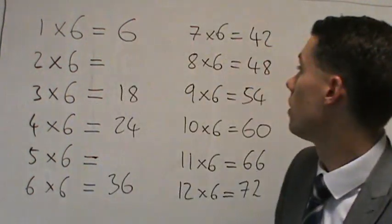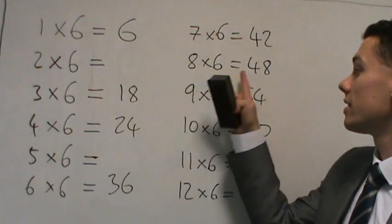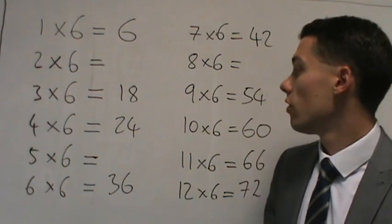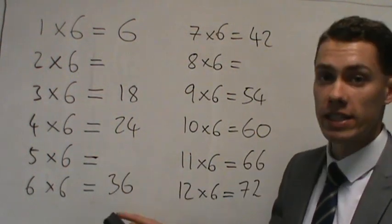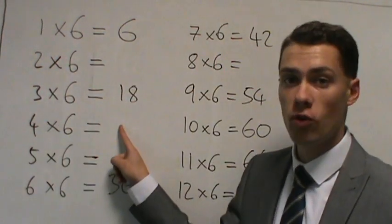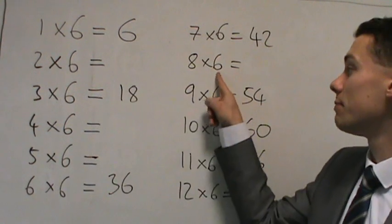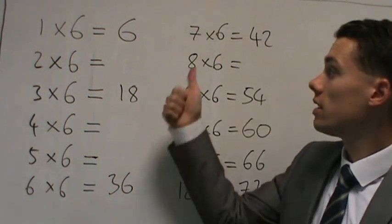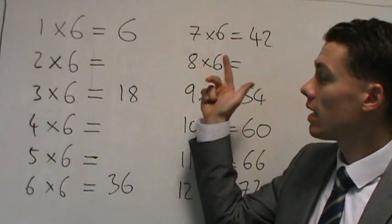I'm now going to rub out two more. I'm going to rub out 8 times 6 is 48 and 4 times 6 is 24. So 4 times 6 is 24 and 8 times 6 is 48. So let's try again.